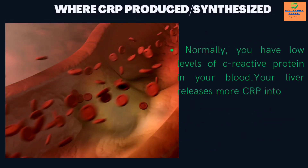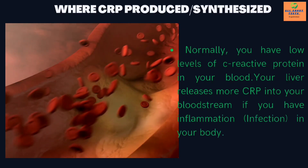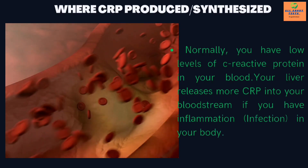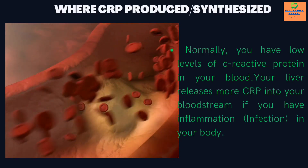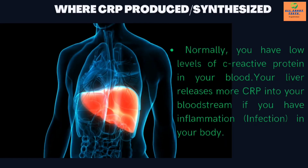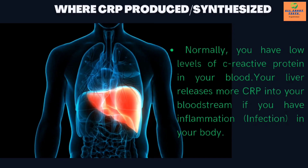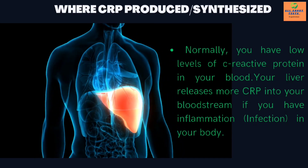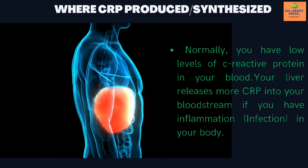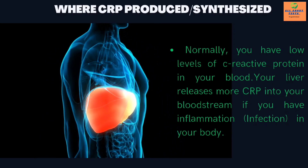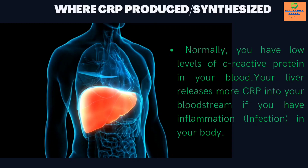Normally, you have low levels of C-reactive protein in your blood. Your liver releases more CRP into your bloodstream if you have inflammation or infection in your body.